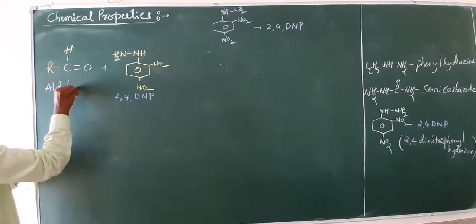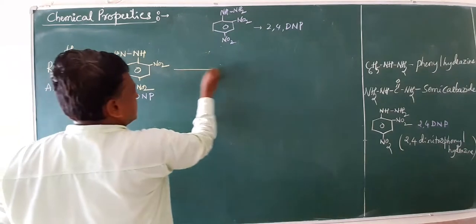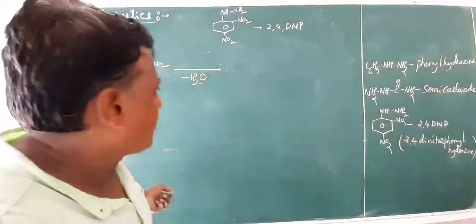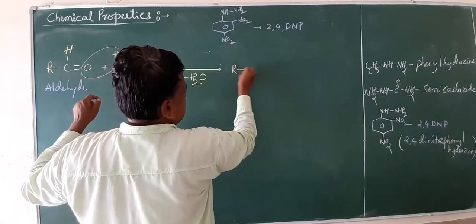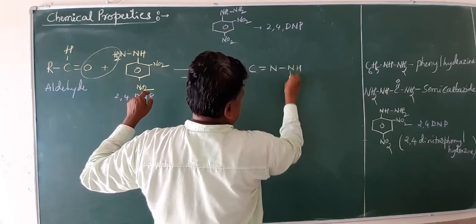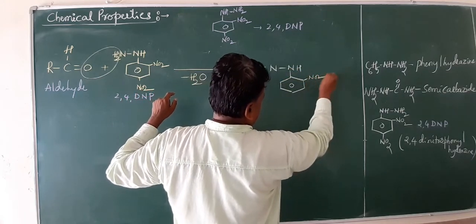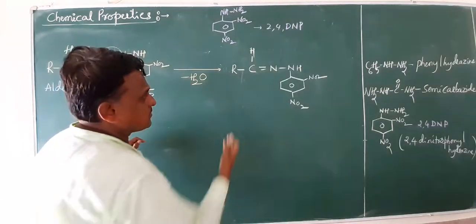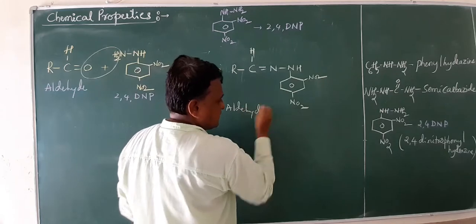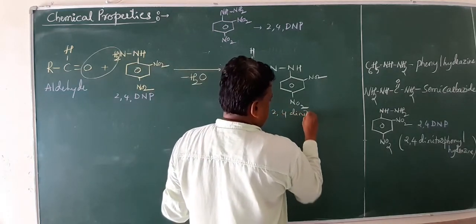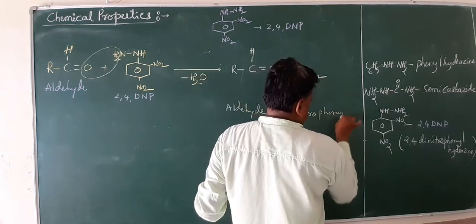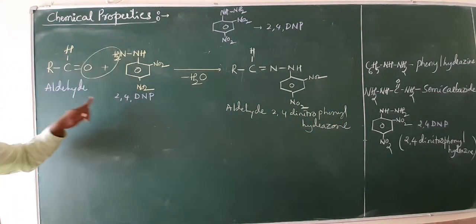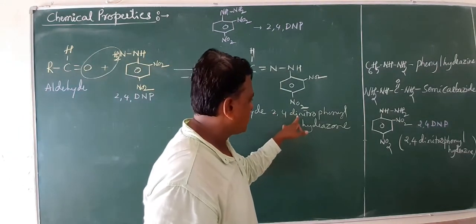Aldehyde R-CHO reacts with 2,4-dinitrophenylhydrazine (H2N-NH-C6H3(NO2)2). With loss of water, the product formed is R-CH=N-NH-C6H3(NO2)2. The name of this compound is aldehyde 2,4-dinitrophenylhydrazone.